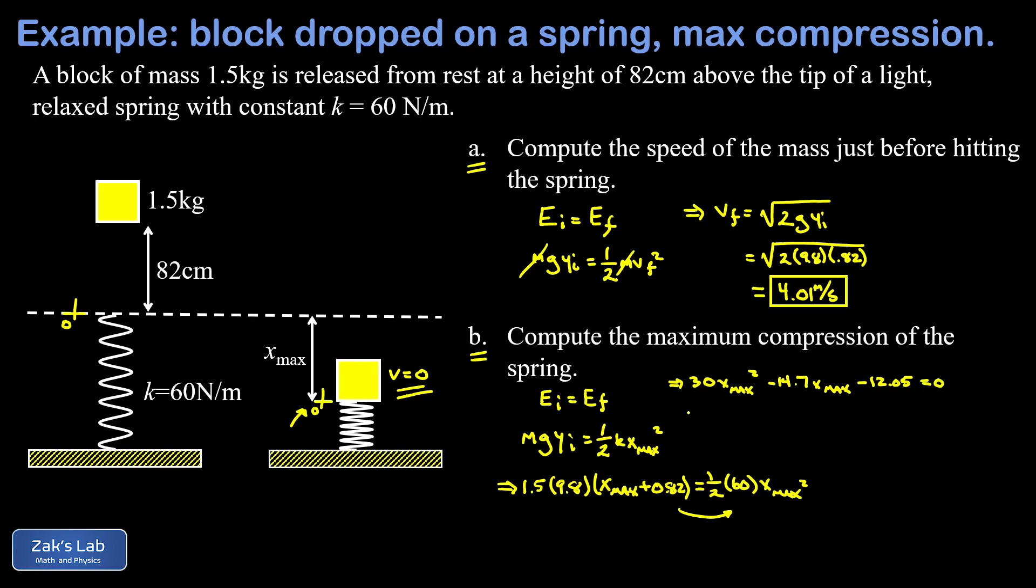And now we can apply the quadratic formula. So x max is negative b—that's 14.7—plus or minus the square root of b squared, that's 14.7 squared, minus 4 times 30 times negative 12.05. Then we have to divide that whole thing by 2 times a, which is 60.